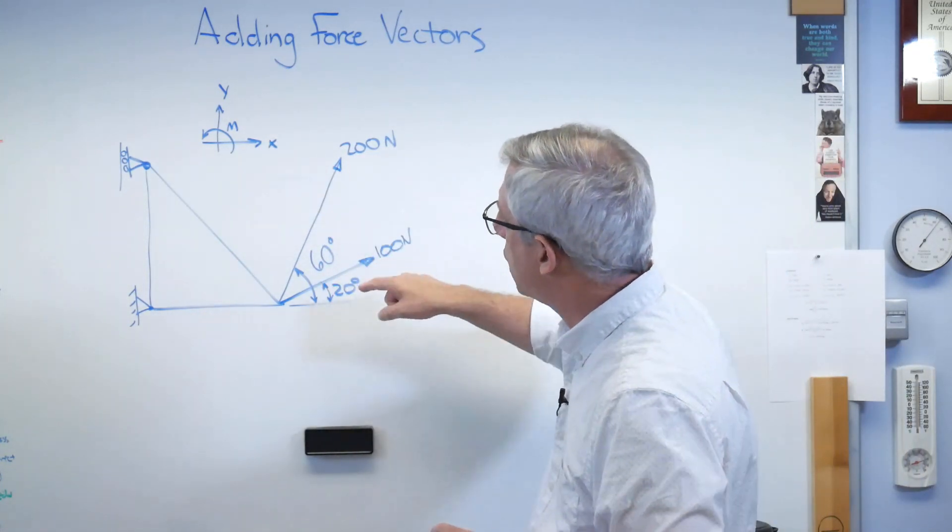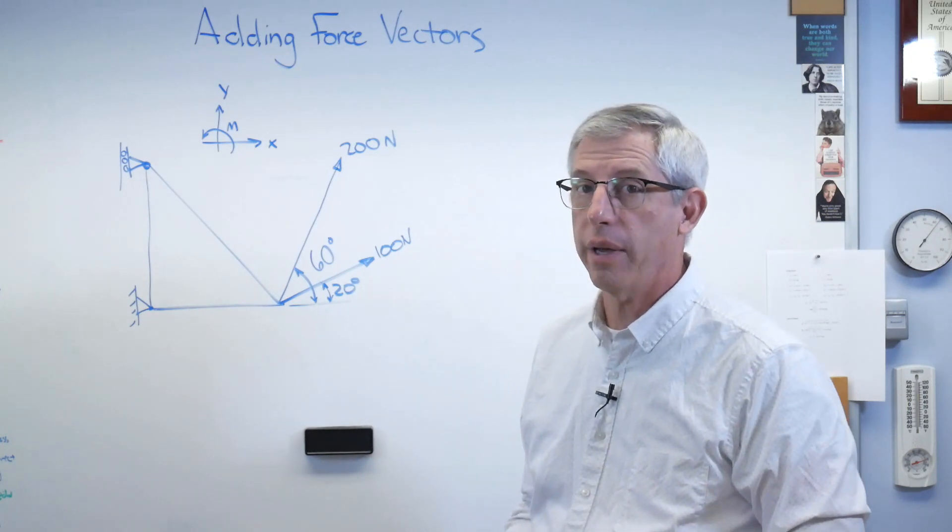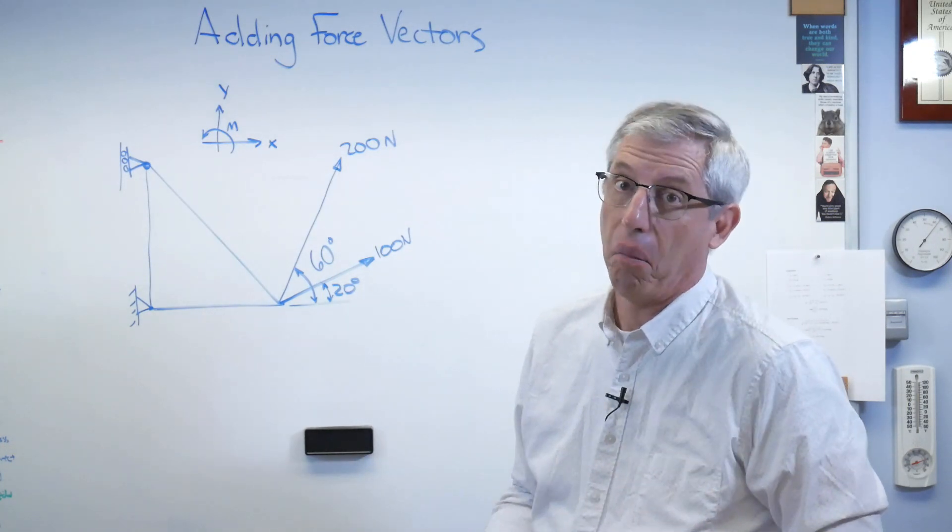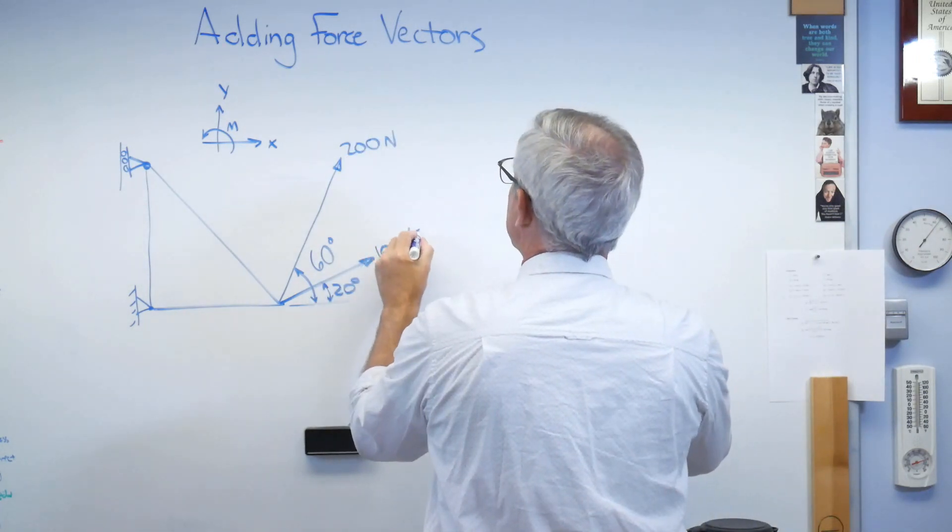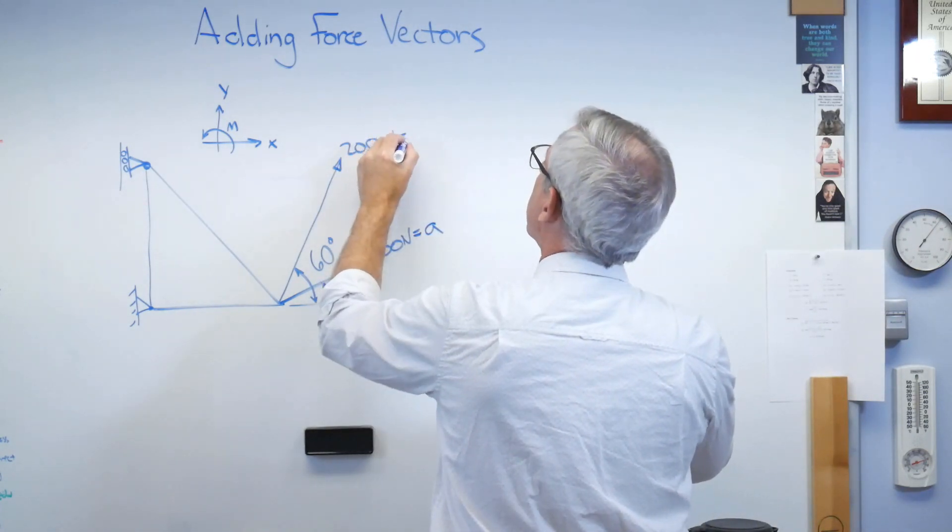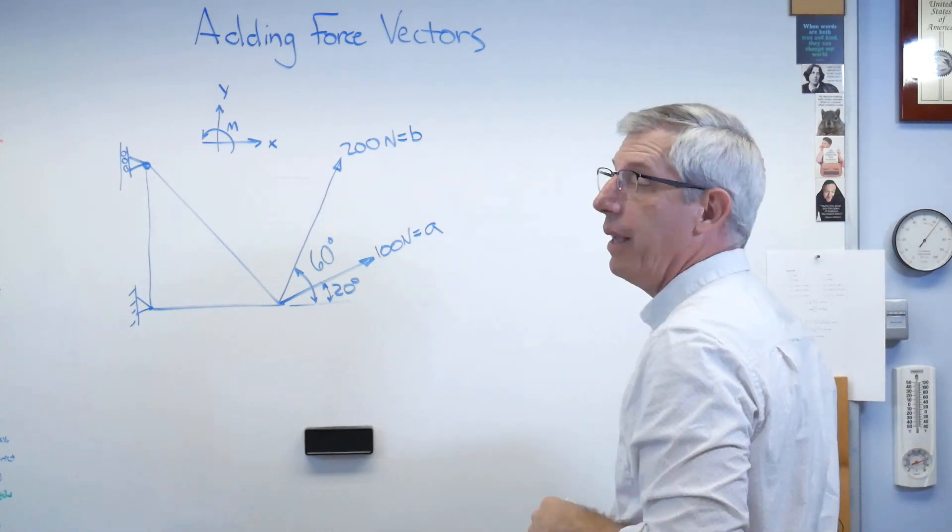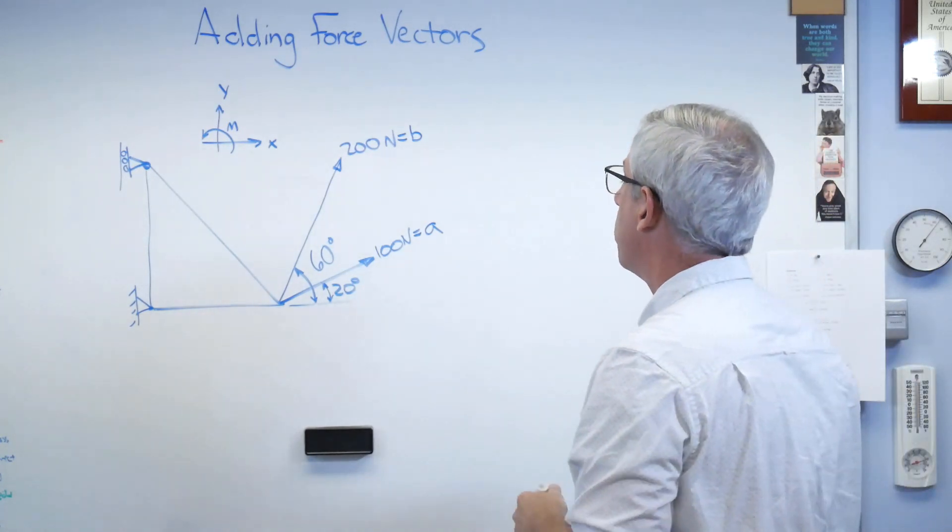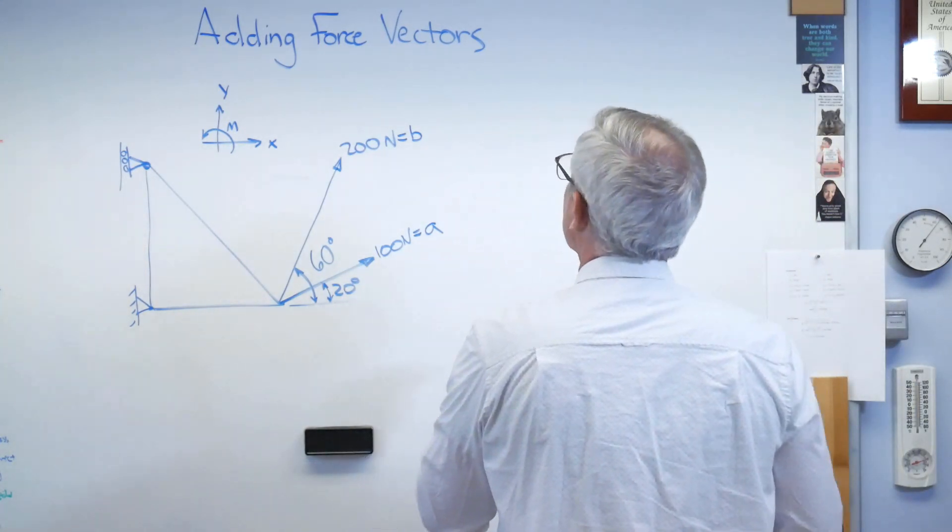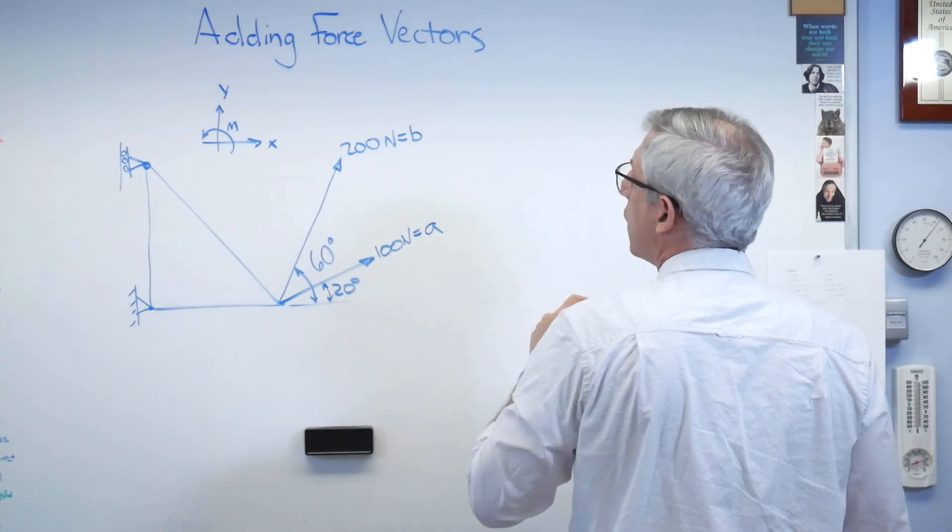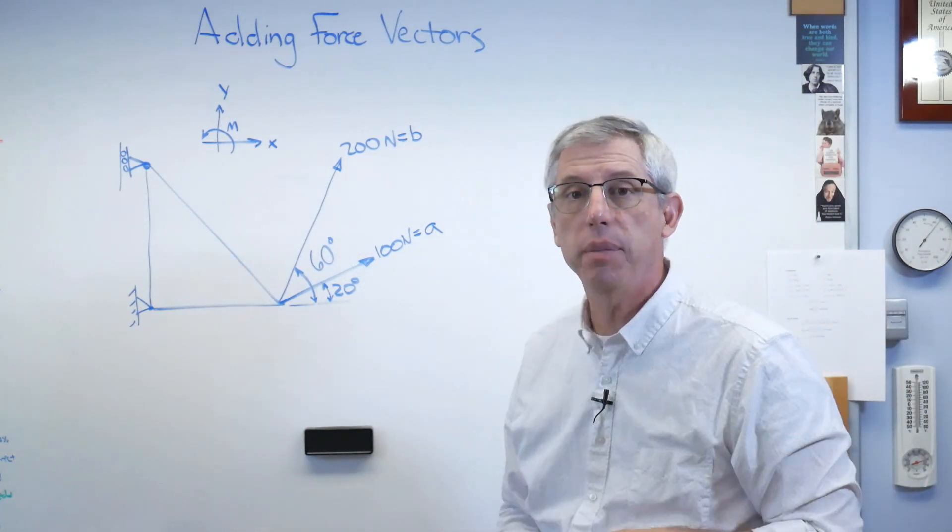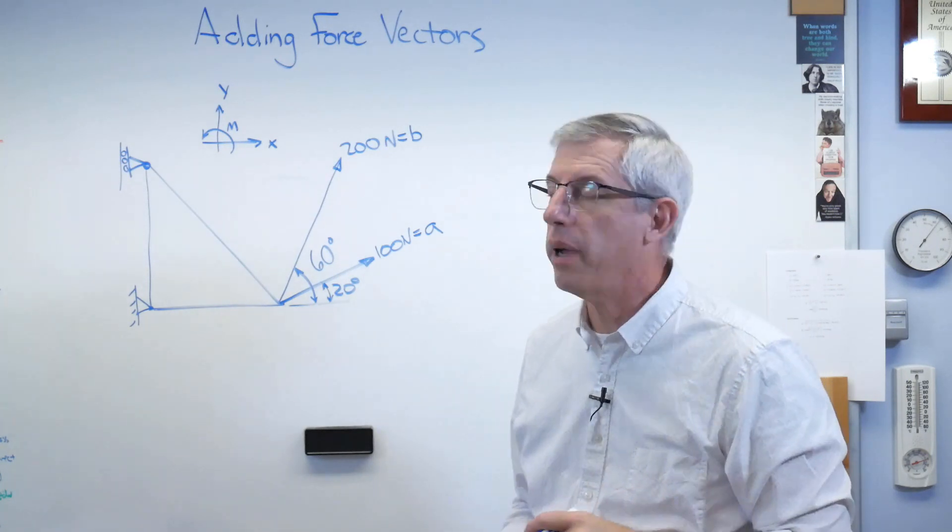Now in order to do this, we're eventually going to need the x and y components anyway. Well, let's just do that now. I'm going to call this force A and that force B, and the resultant I'll call C. So if I want to do this by adding vectors, or adding the components, what I'm going to do is break A and B down into their x and y components.